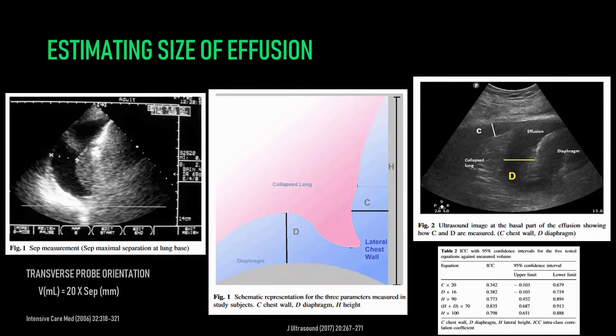Ultrasound is also important for estimating the size of the effusion. It's very important to take note of how large the anechoic space is between the chest wall and relevant anatomical structures you may not want to hit with a needle. You should generally take a measurement of this. On the screen left, there's a technique using a transverse orientation of the probe — that is, with the probe marker oriented perpendicular to the patient's longest axis. You can get a simple estimate of the effusion size by measuring the separation between the chest wall and the remaining lung tissue and multiplying that by 20, giving a volume in milliliters.